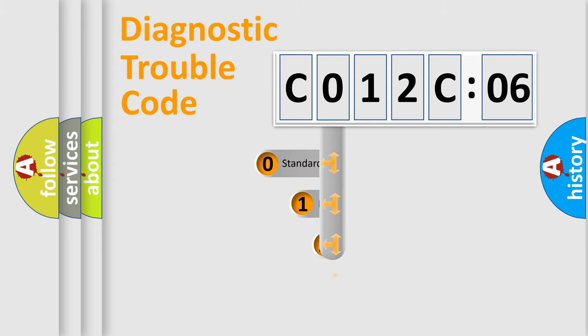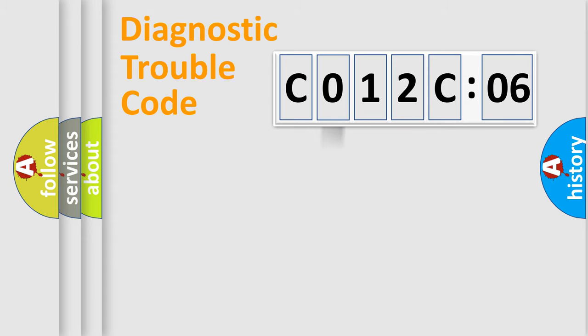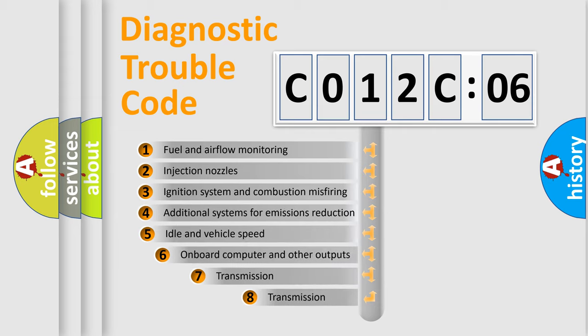This distribution is defined in the first character code. If the second character is expressed as 0, it is a standardized error. In the case of numbers 1, 2, or 3, it is a more specific expression of the car-specific error.